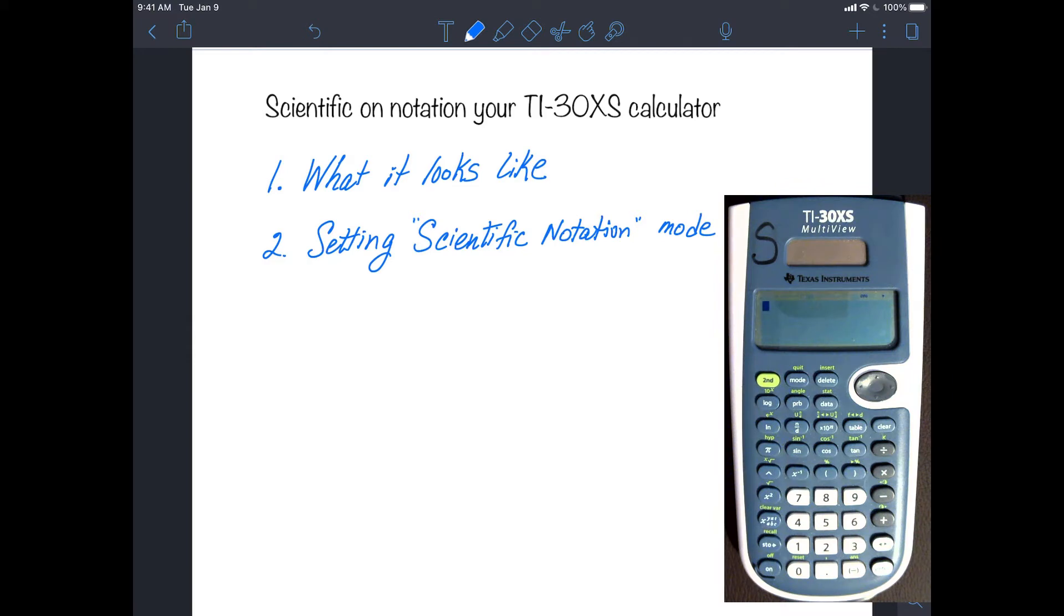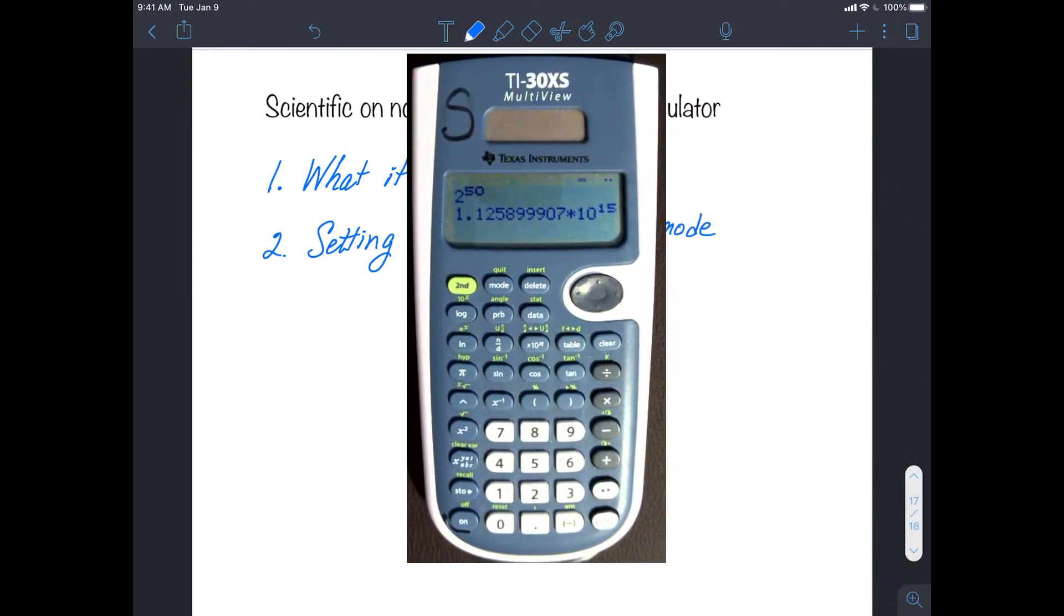Now I'm going to do a calculation that would result in a number that's too big for the calculator to display. So I'm going to press 2 to the power 50, Enter. And this is what scientific notation looks like on your calculator. You see that the answer is 1.12 and so on, times 10 to the 15th.